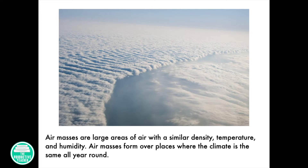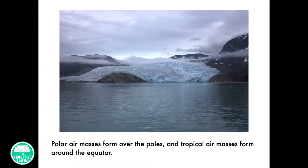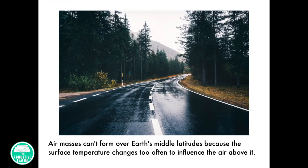Air masses are large areas of air with a similar density, temperature, and humidity. Air masses form over places where the climate is the same all year round. Polar air masses form over the poles, and tropical air masses form around the equator. Air masses can't form over Earth's middle latitudes because the surface temperature changes too often to influence the air above it.